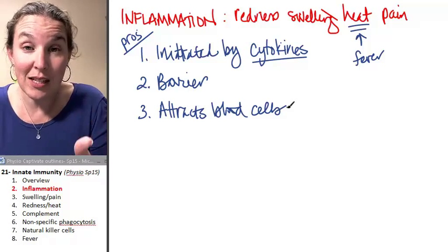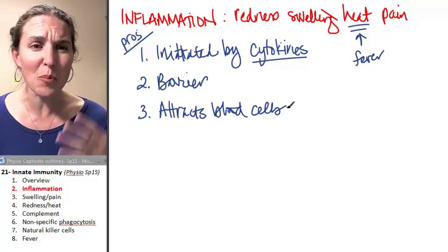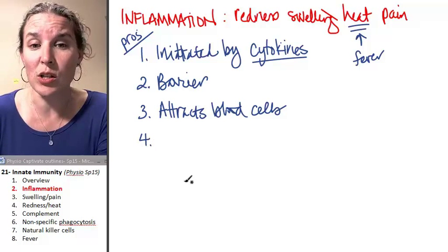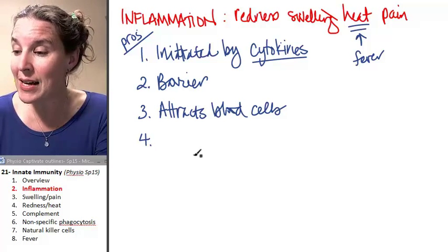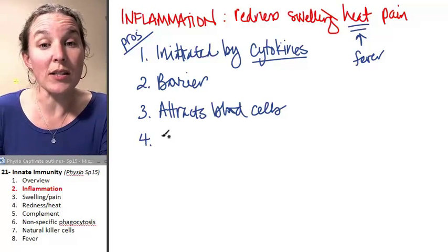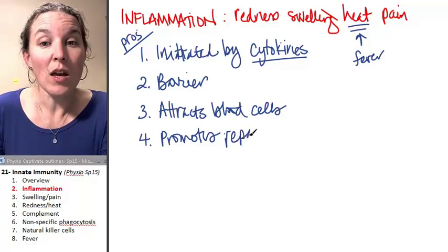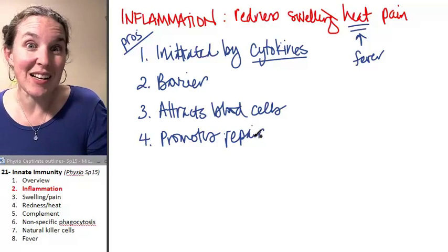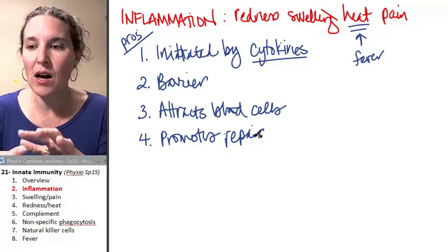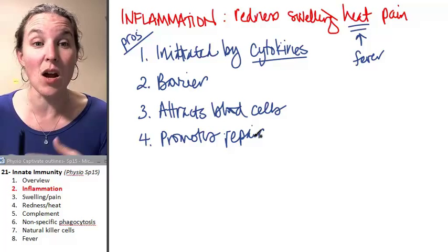So the more blood cells that you can bring in to an area of potential infection, the better. Like, bring them all in. Let's bring the whole army in so that if there are any bad guys here, we can yumpshalize them. And the last one is that the inflammatory response promotes repair. So you bring in the white blood cells to help get rid of the gunk so we can get better. You bring in other blood supplies, chemicals, so that you can get better and you can not have this invader.